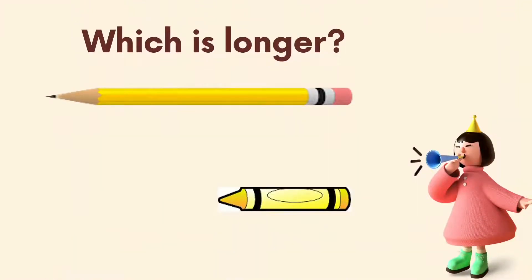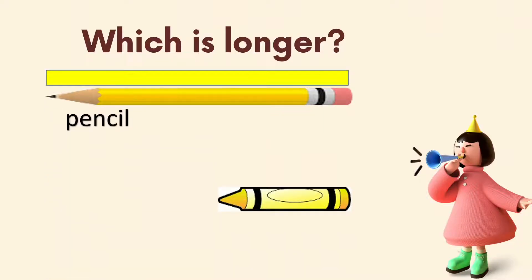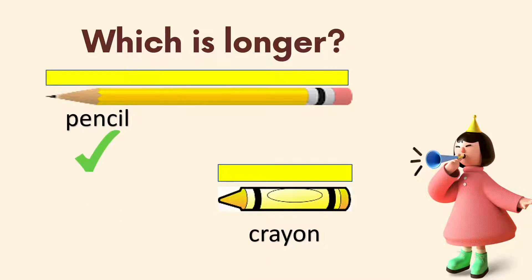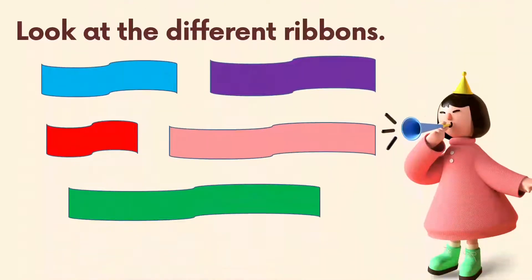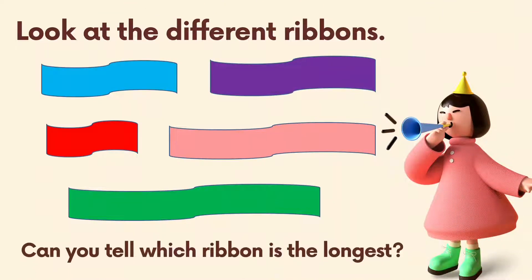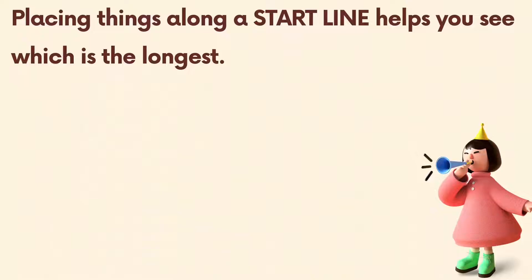Which is longer — is it the pencil or the crayon? The pencil is longer than the crayon. Now, you can also use a start line to compare. Look at the different ribbons. Can you tell which ribbon is the longest? If you use a start line, this will help us see which one is the longest and which one is also the shortest.